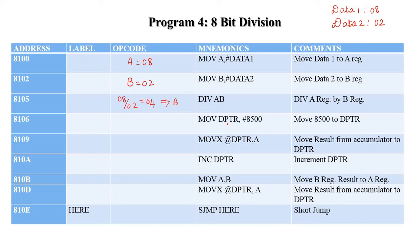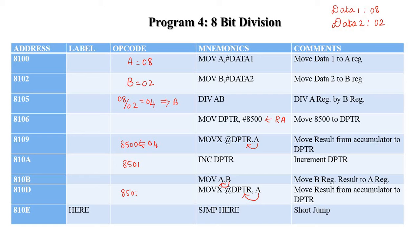The result address 8500H is moved to the data pointer. The accumulator content (04H) is moved to the data pointer, so memory location 8500H contains 04H. Then we increment the data pointer to 8501H. The B register content is moved to the accumulator, and that value is moved to the data pointer, so 8501H contains 00H.